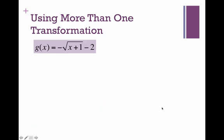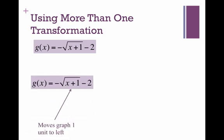What about negative square root of x plus 1 minus 2? Again, we need to identify the transformations. We have a plus 1, so that moves the graph 1 unit to the left. Keep in mind, opposite sign on the horizontal shifts. The minus 2 moves our graph down 2 units. And the negative out in front flips our basic square root of x function over the x-axis.